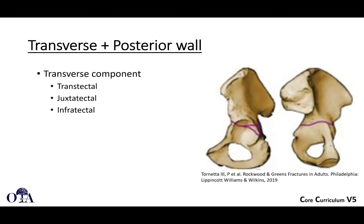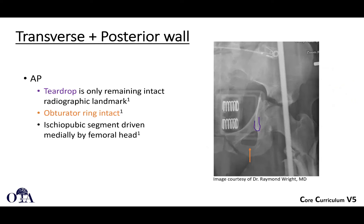Transverse and posterior wall is a somewhat common fracture pattern among the associated types. You have the sort of inverted Y configuration. The transverse fracture line runs from anterior to posterior, right across. The transverse component has transtectal, juxta-tectal, and infratectal subtypes, which apply here as well, but you also have a posterior wall fracture. On the AP x-ray, the teardrop is the only remaining intact radiographic landmark. The obturator ring is typically intact. The ischiopubic segment is driven medially by the femoral head. You often see that medial displacement of the femoral head taking the ischiopubic segment with it.